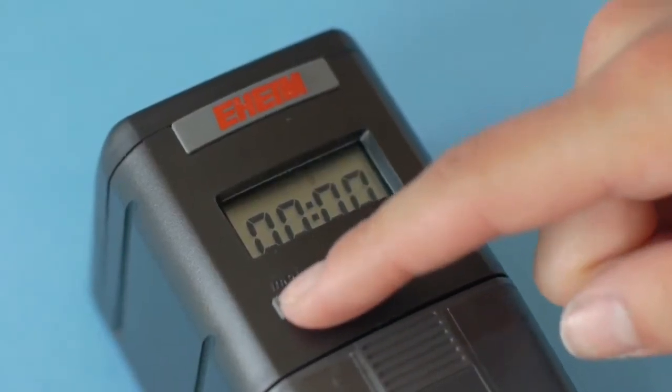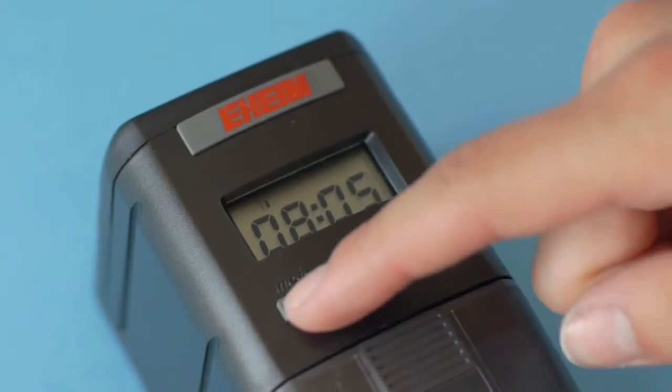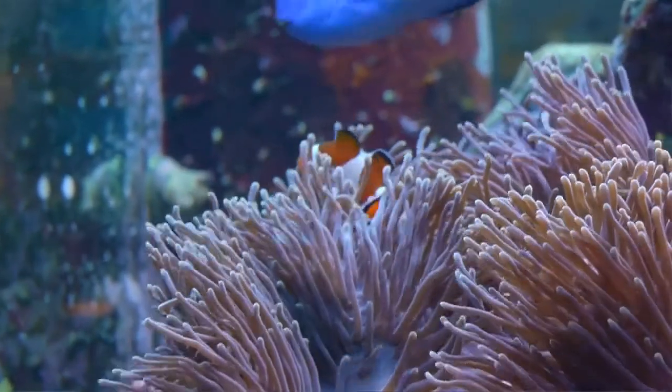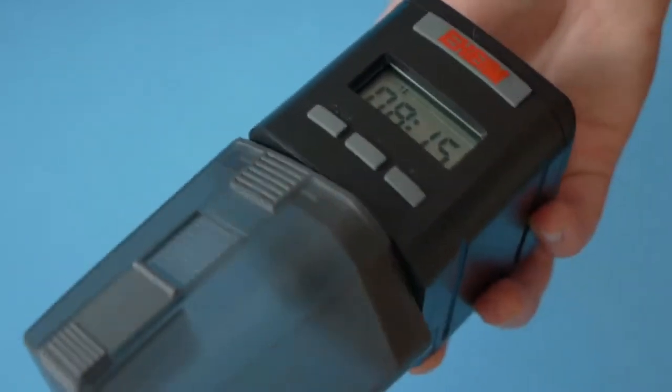You can program up to four different feeding times a day. Repeat these steps for the additional times. If you want to feed your fish outside of the set feeding times, it's as simple as pressing the Eheim manual feeding button.